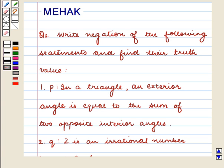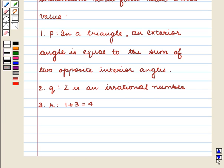Hello and welcome to the session. In this session we are going to discuss the following question: Write negation of the following statements and find their truth value. P: In a triangle, an exterior angle is equal to the sum of opposite interior angles. The second sentence is Q: 2 is an irrational number. And the third is R: 1 plus 3 is equal to 4.